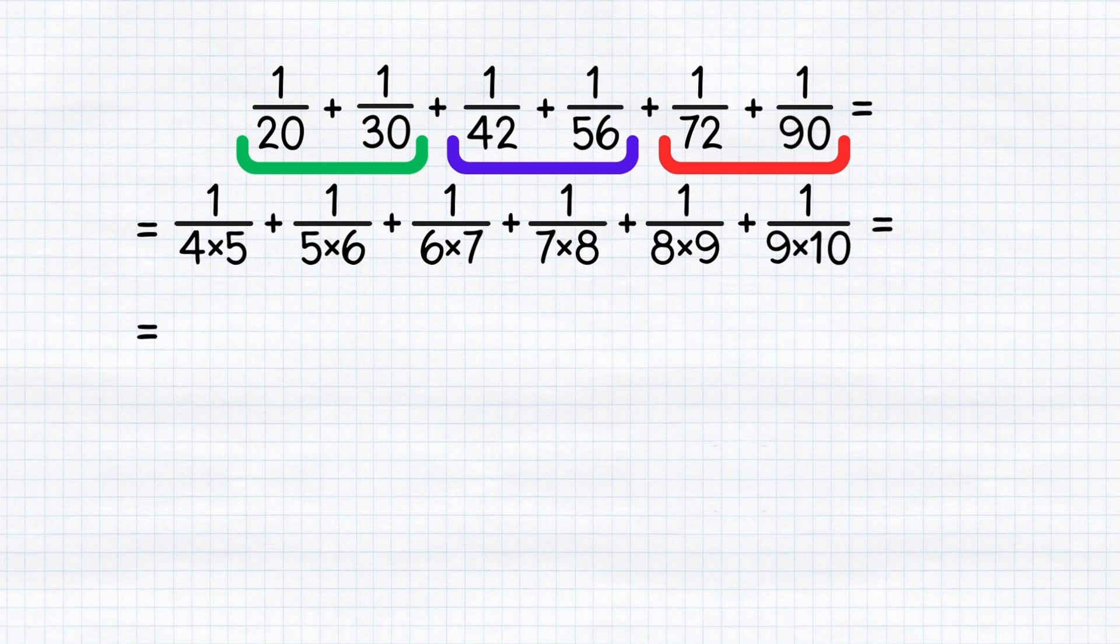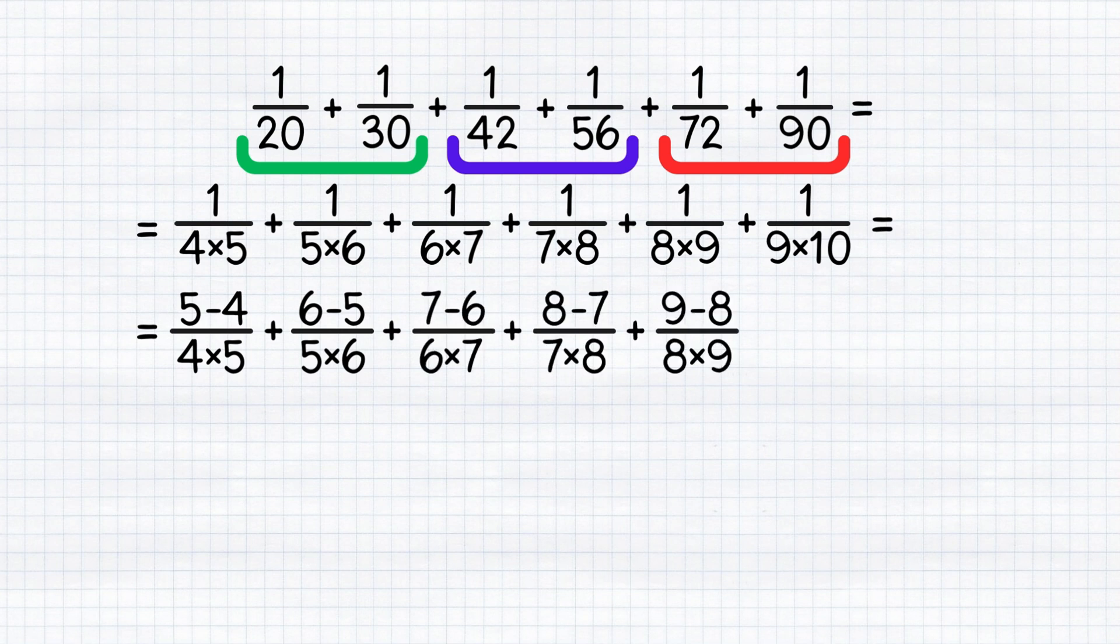The numerator of each fraction is 1. Now, let's define this 1 as the difference between the numbers we listed in the denominator. So for the first case, if we want to get 1 in the numerator, we can express it as 5 minus 4, for the second as 6 minus 5, the third as 7 minus 6, and so on.